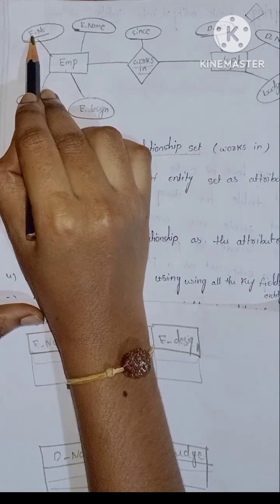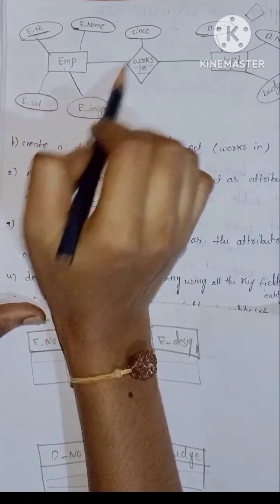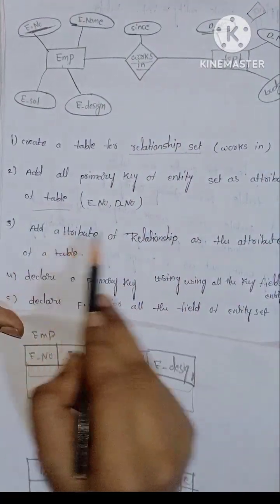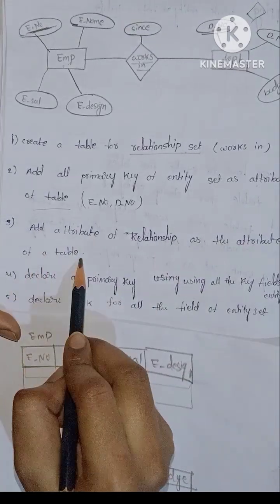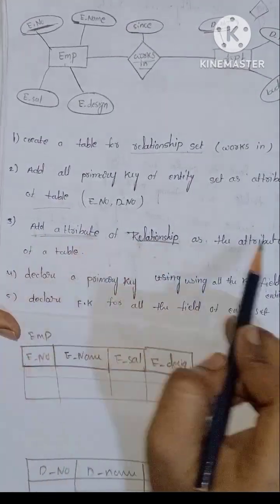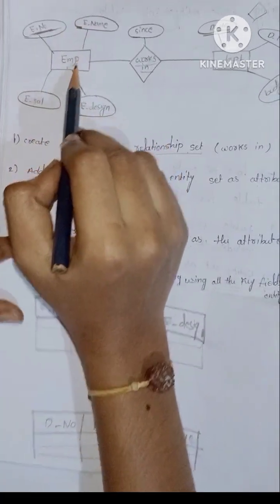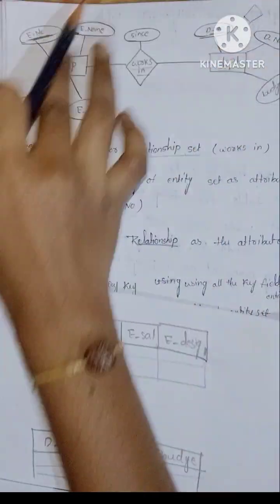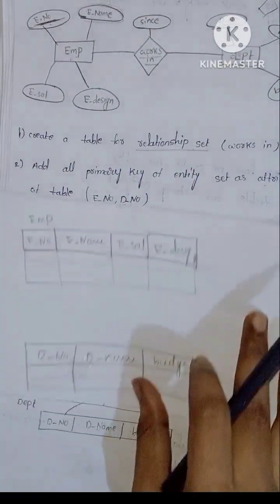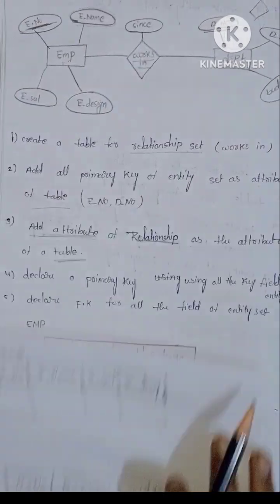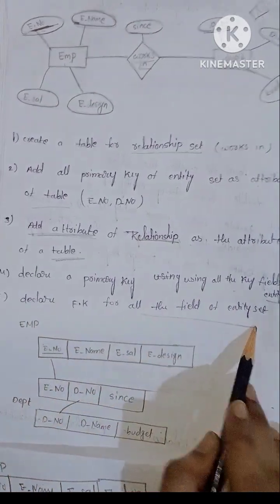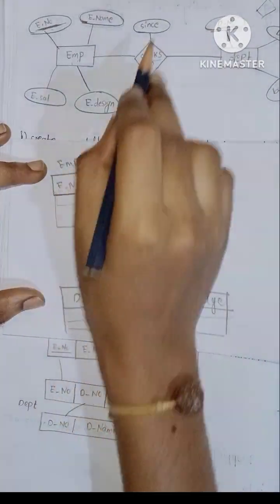Add all primary keys of each entity set as attributes of the table. Employee number is the primary key of the employee table, shown with an underline. Department number is the primary key of the department table. Also add attributes of the relationship as attributes of the table. The relationship attributes are included as columns.